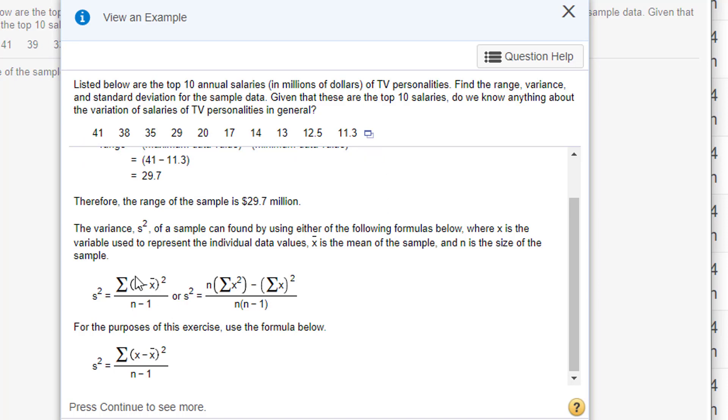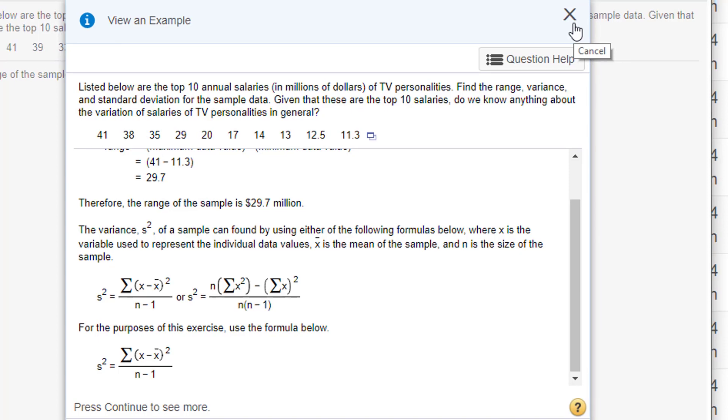You're doing that for every single one of these values and squaring them. Then you add up all those values and divide by n minus 1. Remember, n is the sample size, so if you have 10, that would be divided by 9. I think it's a good activity to go through and see once.